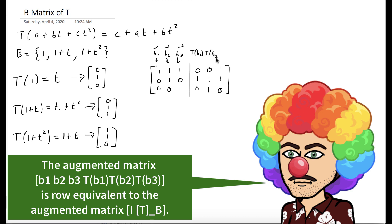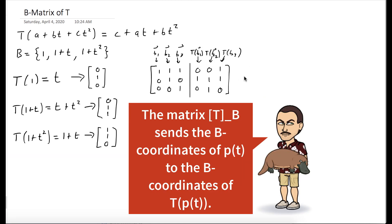And we're going to row reduce until the first three columns become the identity. And what's left over on the right is the B-matrix for T.